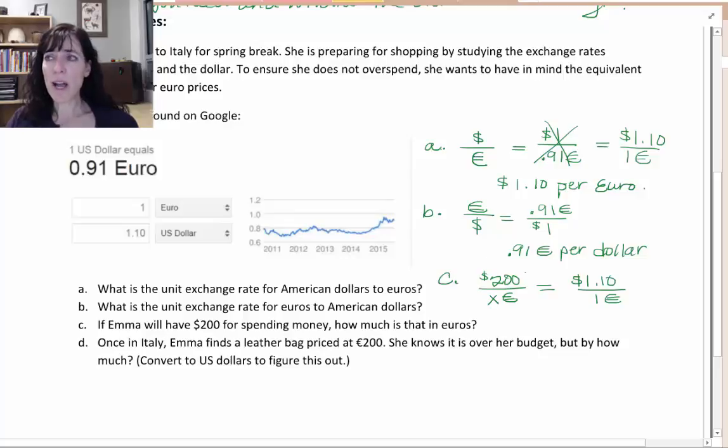We could use either fact, but we just have to make sure we write them in the same order. If we put dollars on the numerator on both, we have to do that on both sides of the equal sign.